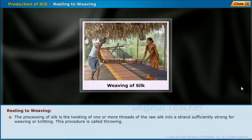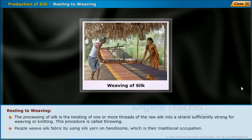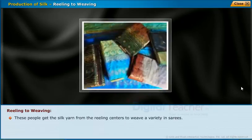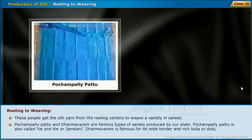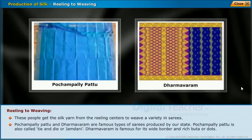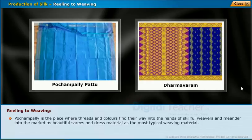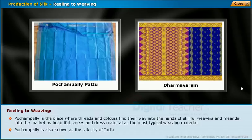The processing of silk involves twisting one or more threads of raw silk into a strand strong enough for weaving or knitting — a procedure called throwing. People weave silk fabric using silk yarn on handlooms, which is their traditional occupation. They get the silk yarn from reeling centers to weave a variety of saris. Pochampalli pattu and Dharmavaram are famous types of saris produced in this state. Pochampalli pattu is also called tie-and-dye or Jamdani, while Dharmavaram is famous for its wide border and rich bhuta or dots.